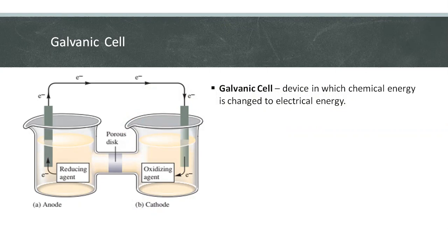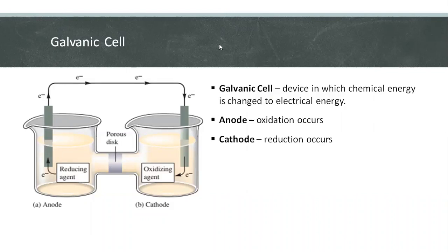The electrode compartment in which oxidation occurs is called the anode, and the electrode compartment in which reduction occurs is the cathode.